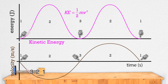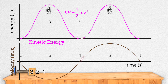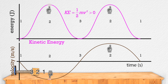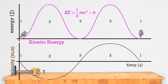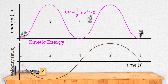The kinetic energy at position 2 has its maximum value. This is logical because the velocity has its maximum magnitude at position 2. The graph of kinetic energy is always positive because velocity is squared in the kinetic energy equation and mass can't be negative, so it does not matter if the velocity of the mass is positive or negative. Squaring the velocity will make the kinetic energy positive. So the kinetic energy is always greater than or equal to zero.